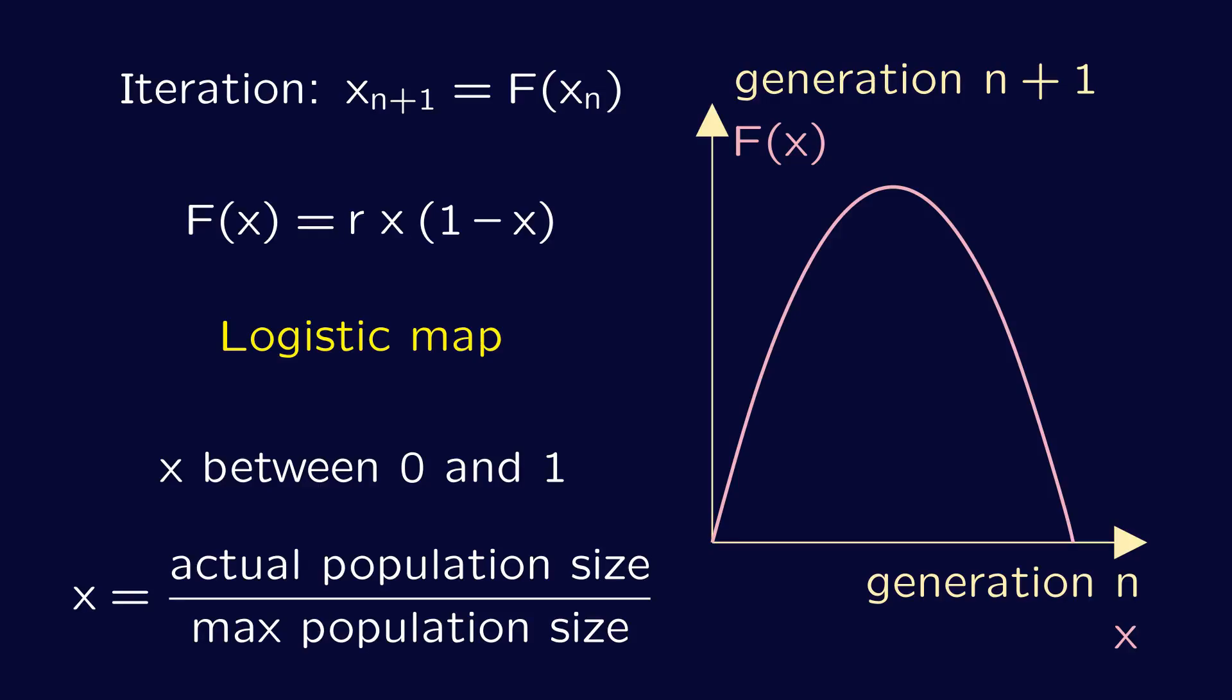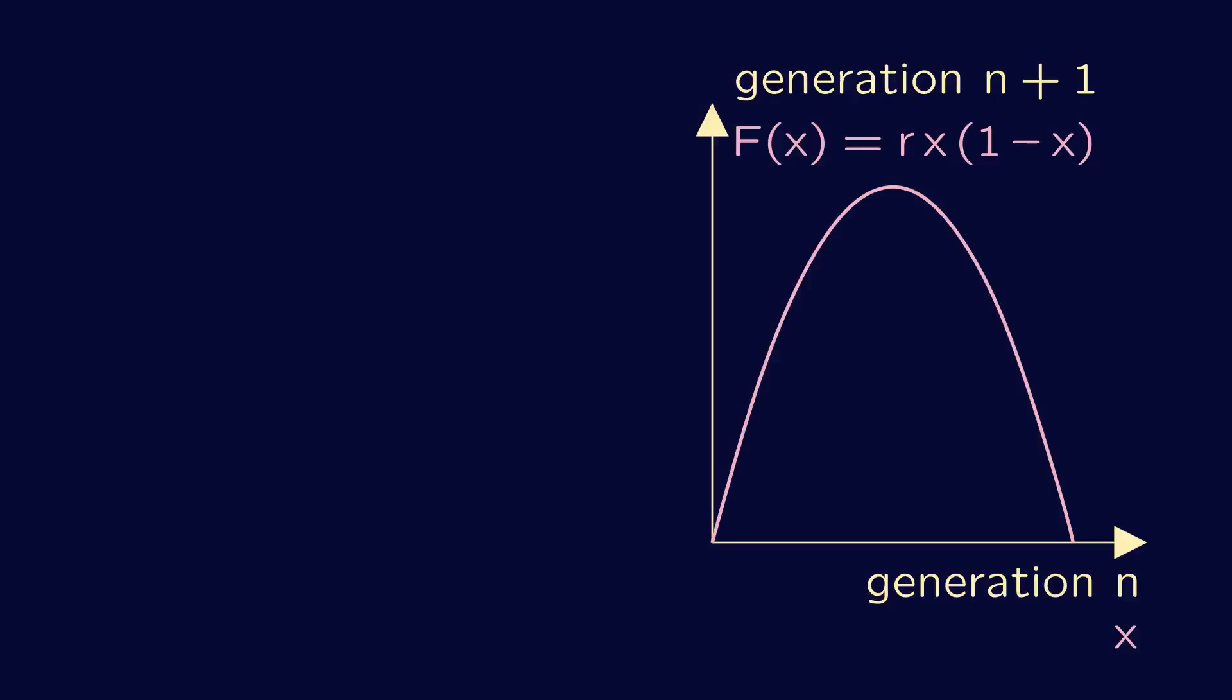To study the population dynamics of the logistic map, let's make a plot of population over time on the left of our screen. We start with some initial population size, and then use this as x value on the right hand plot, find the y value assigned to it by the logistic map, and transfer this new value to the left hand plot, marking the population size at the next point in time.